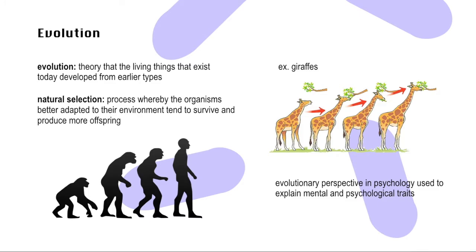In psychology, the evolutionary perspective is used to explain mental and psychological traits such as memory, perception, language, and behavior in terms of natural selection. Today, we will be looking at the evolutionary explanation of why pregnant women are particularly sensitive to disgust during their first trimester of pregnancy, and why people have stronger disgust reactions when looking at things that are infectious, harmful, or cause illnesses.